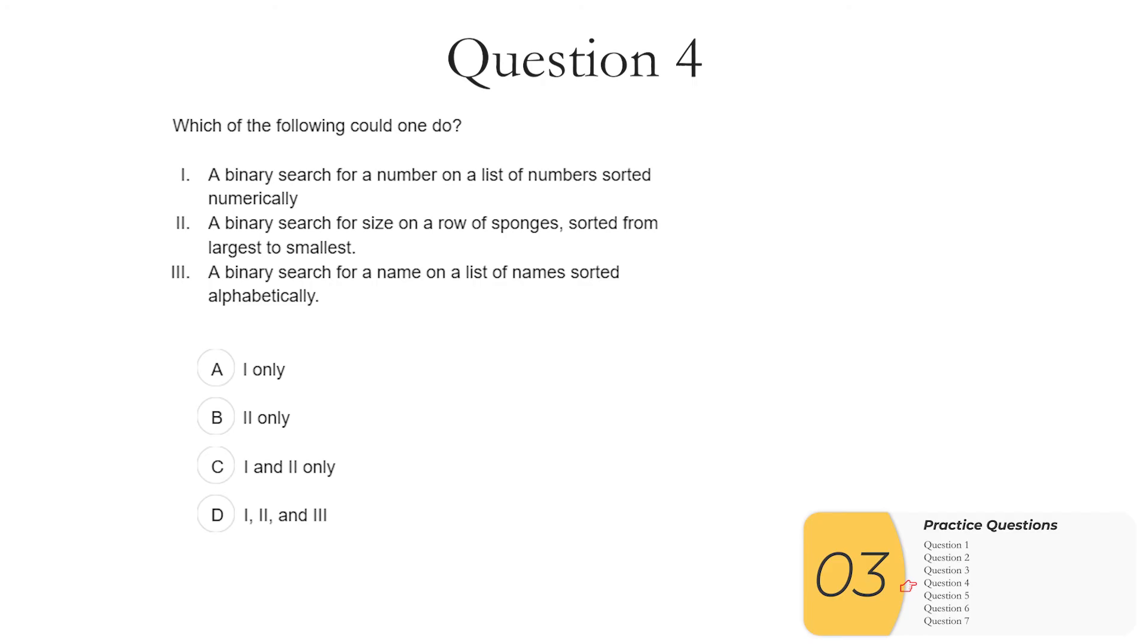Question four. Which of the following could one do? One. A binary search for a number on a list of numbers sorted numerically. We can do this. Basically what we want to know is when we sort it, can we eliminate half the numbers at each iteration. And we can here. Two. A binary search for size and a row of sponges that have been sorted from largest to smallest. Again we can eliminate one half of them per iteration. We can do this. Three. A binary search for a name on a list of names sorted alphabetically. Once more we can eliminate one half of the items on each iteration. So the answer here is D, one, two, and three. All of these are possible but later on we'll see an example of where we cannot do a binary search.